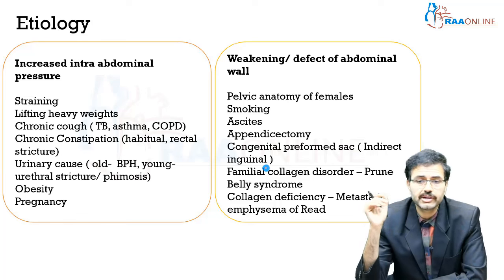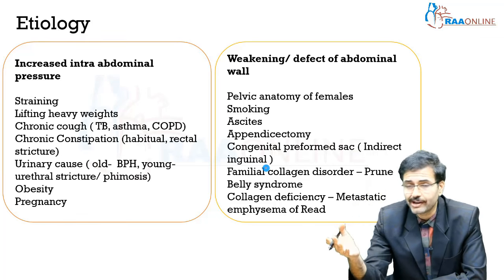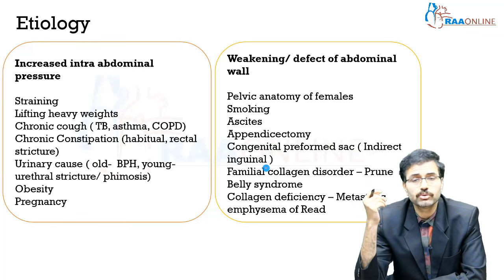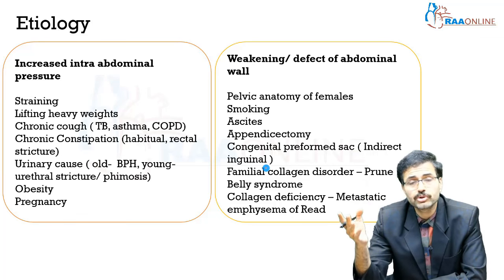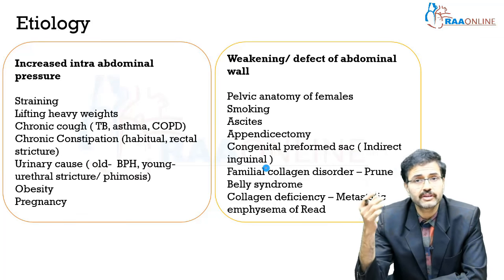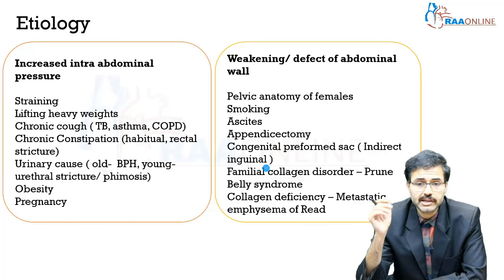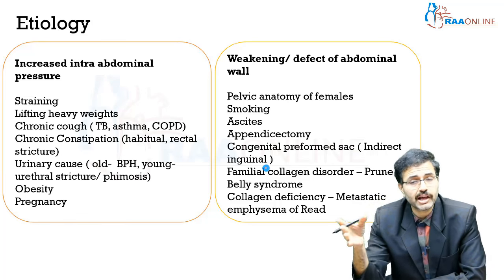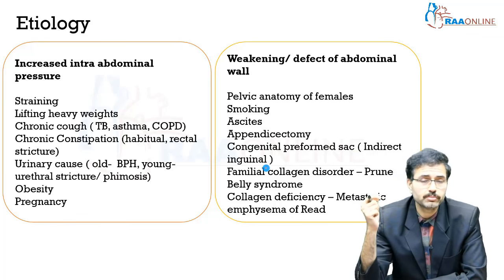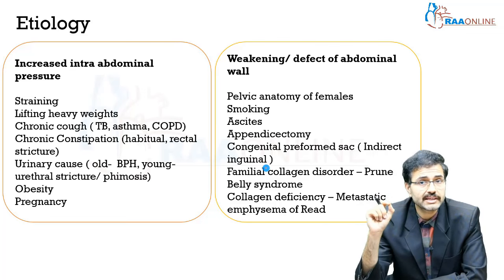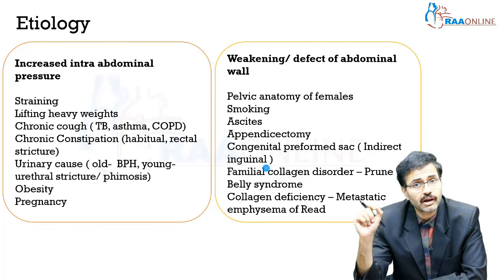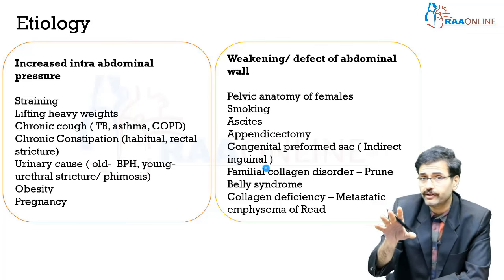Collagen vascular diseases, for example Ehlers-Danlos syndrome, are known to cause hernias. Similarly, familial collagen disorders like prune-belly syndrome are also known to precipitate the occurrence of any hernia.